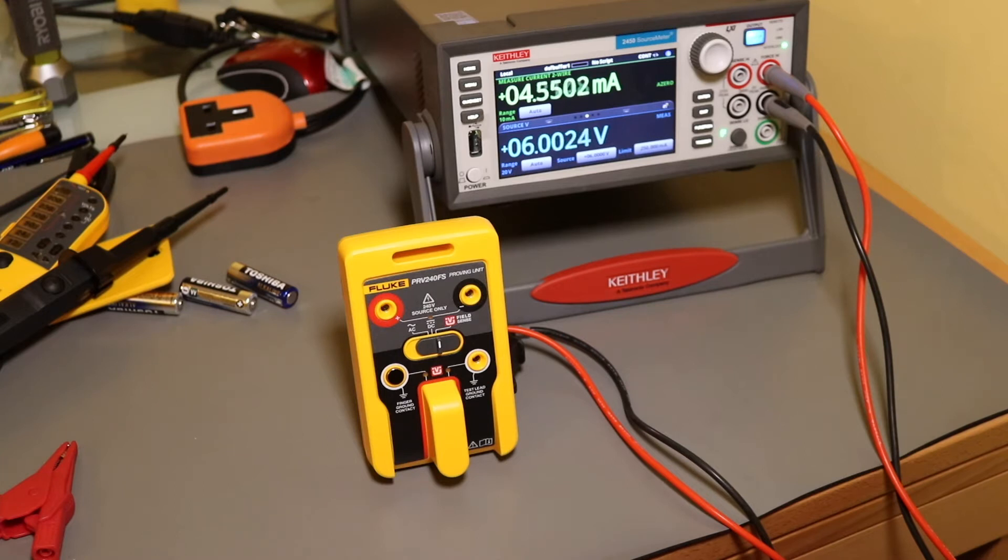Sometimes after a few moments the supply will then drop back down to around about 16-17mA, but it doesn't always do that and sometimes it stays drawing 4.5mA, which will probably explain why the batteries haven't lasted very long because there doesn't seem to be any fixed methodology as to why it drops to 16mA or 4.5mA.